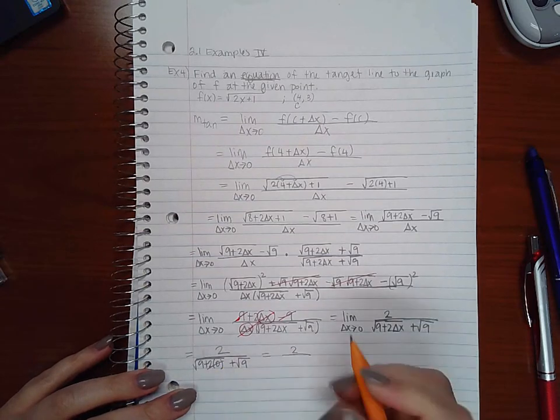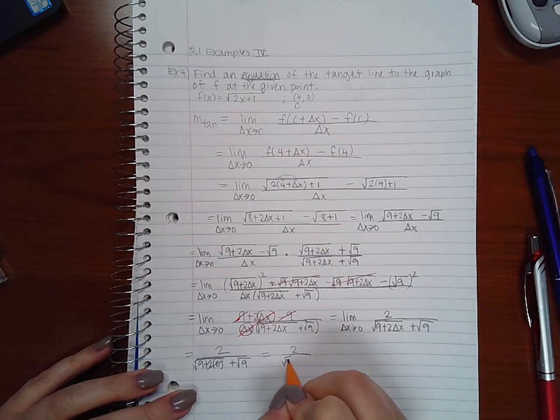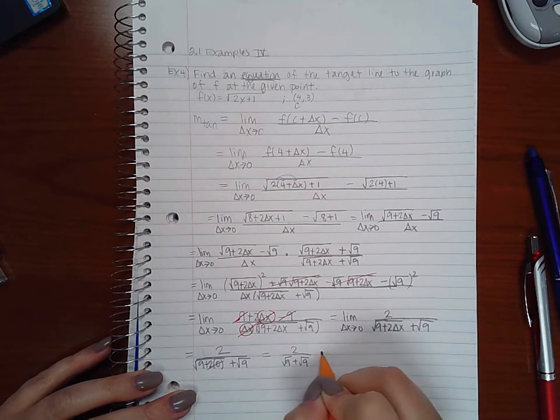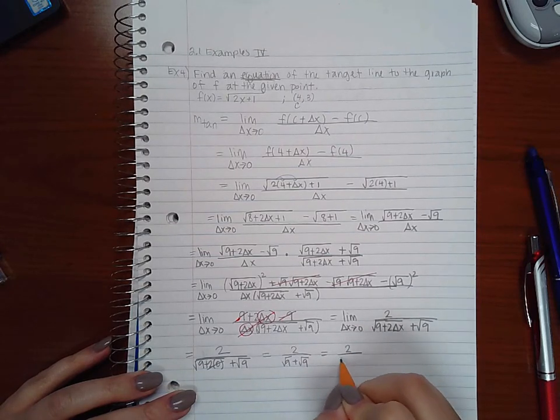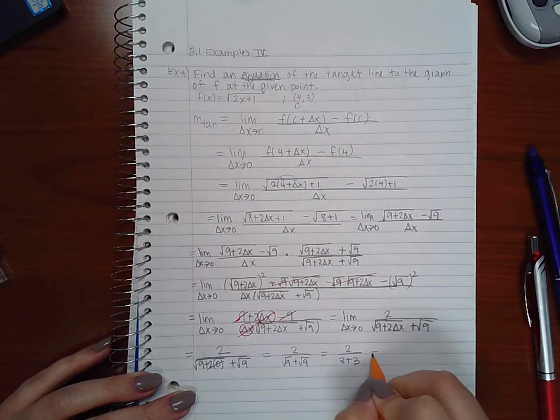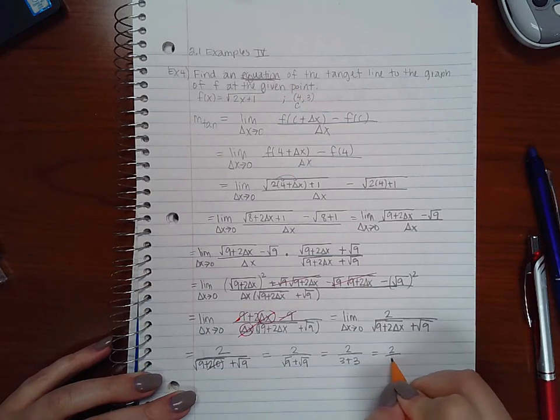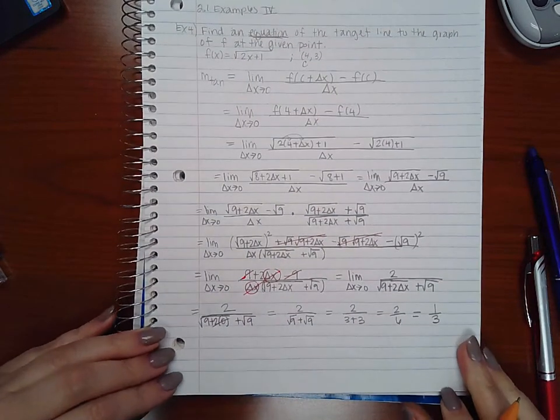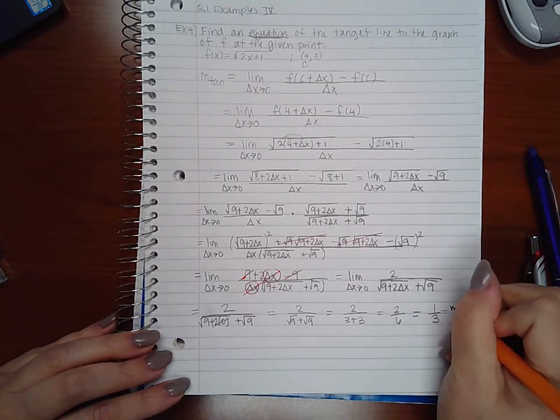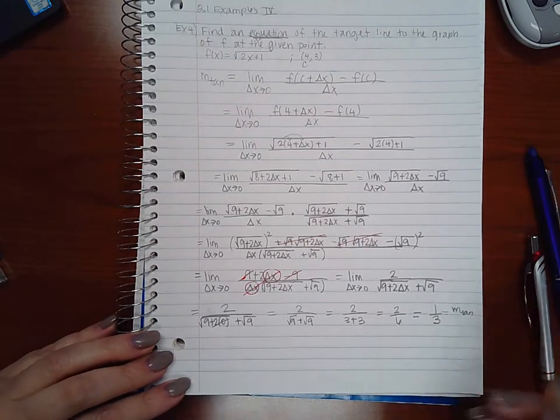Well, two times zero is just zero, so I get the square root of nine plus the square root of nine, which is three plus three, which is six. And this fraction does reduce down to one third, so this is my m tangent, my slope of the tangent line.